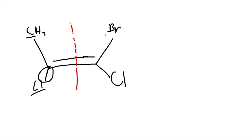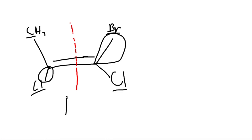On the right side we're comparing bromine to chlorine. Bromine has a higher atomic mass than chlorine, so this side gets selected. The selected groups are on different ends, so this is called E formation.